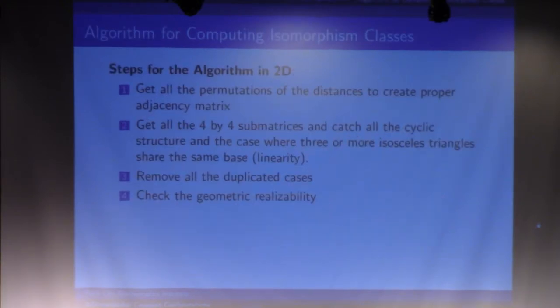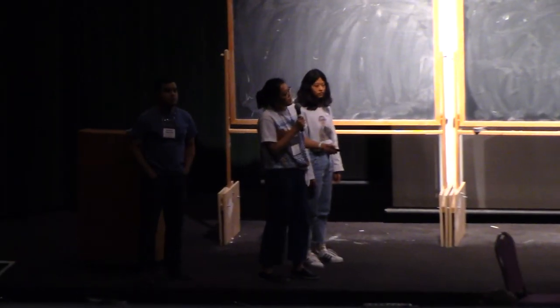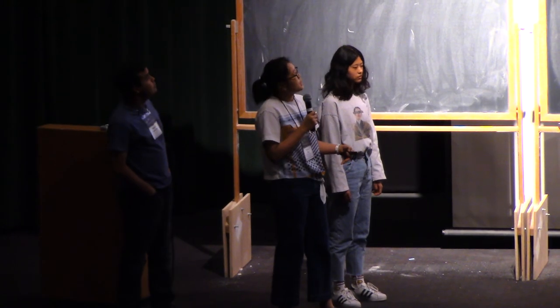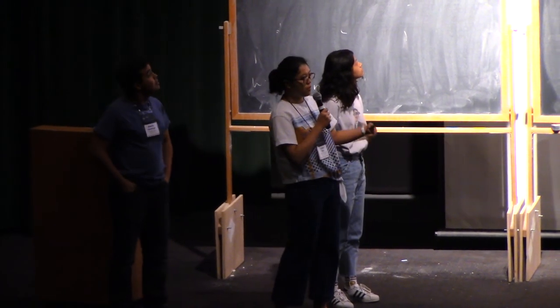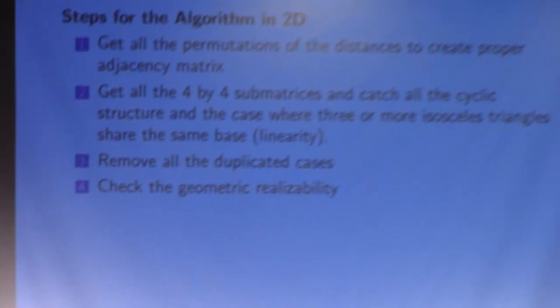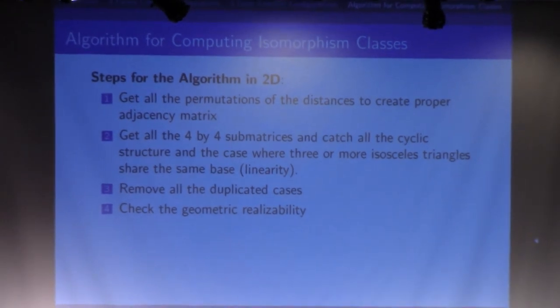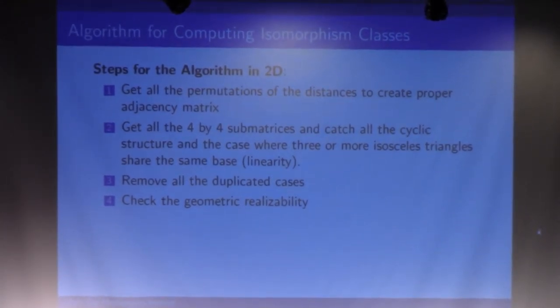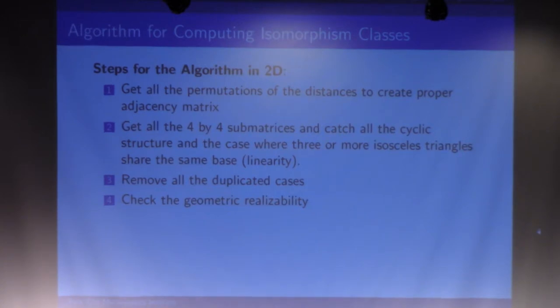This algorithm also comes from the paper that Paulson's students wrote. Basically, what they do in 2D is first get all the permutations of the distances and create an adjacency matrix. They find all the four-by-four sub-matrices to catch all the cyclic and linear cases. Then they eliminate all the duplicate cases and check geometric realizability using the Cayley-Menger matrix.